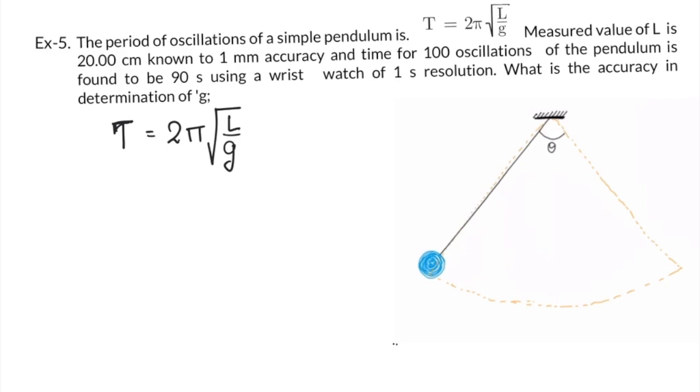You can see here oscillations of the pendulum. If you are starting from here and completing one path, this time is called time period. Time to complete one oscillation is called time period.